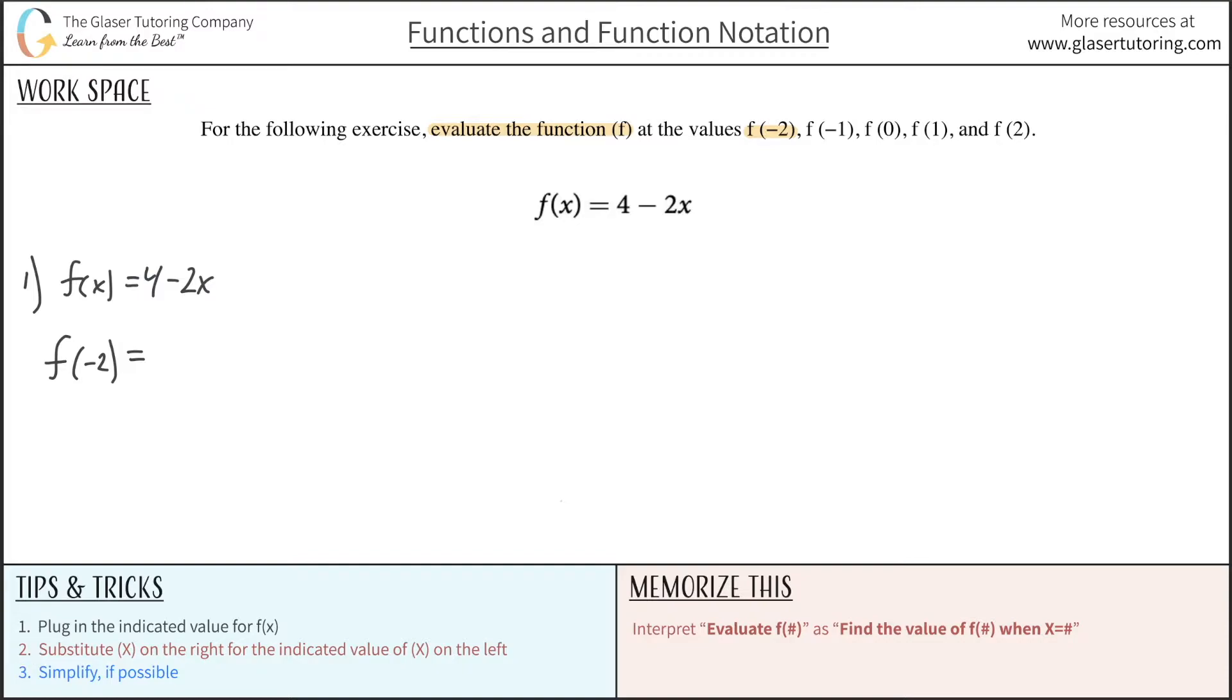So that is essentially step number 2 down here on the left-hand side. It says substitute x on the right, meaning this one, for the indicated value of x on the left, meaning that one. So this is simply now going to be 4 minus 2 times negative 2, because that was the x value they wanted us to find the function at.